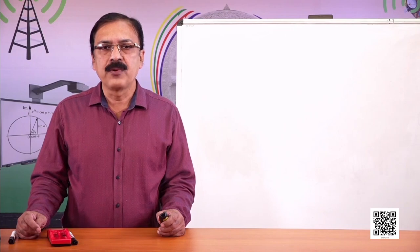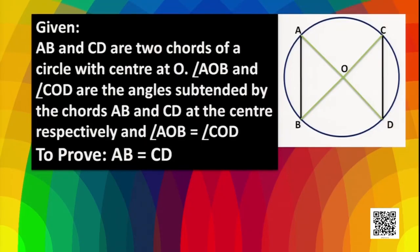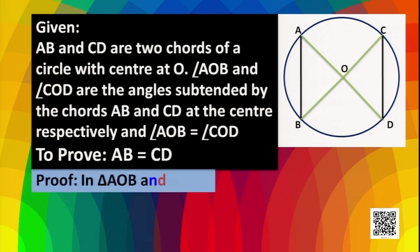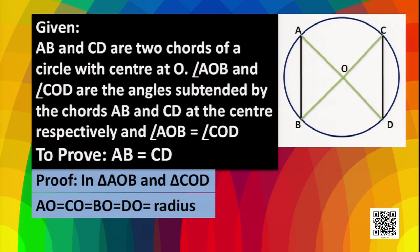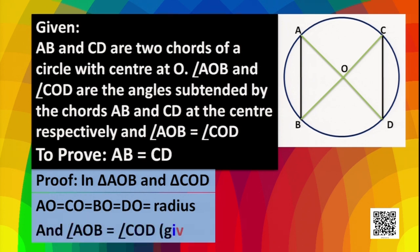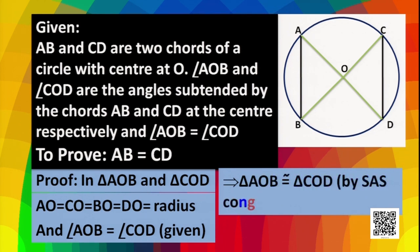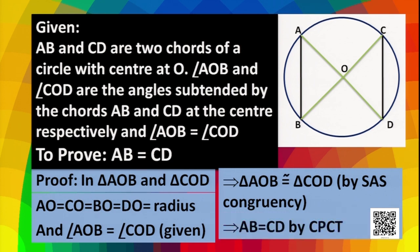We have to prove that AB is equal to CD, meaning the chords are equal. Again we take the same two triangles for congruency. In triangle AOB and triangle COD: AO is equal to CO, BO is equal to DO, and all four are the same as the radius of the circle. The third condition is angle AOB is equal to angle COD. So triangle AOB and triangle COD are congruent by side-angle-side congruency. As the triangles are congruent, their corresponding parts give AB is equal to CD.